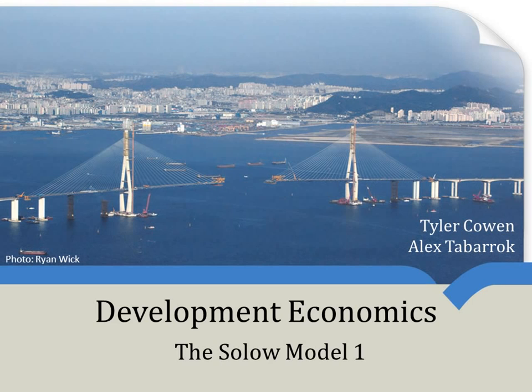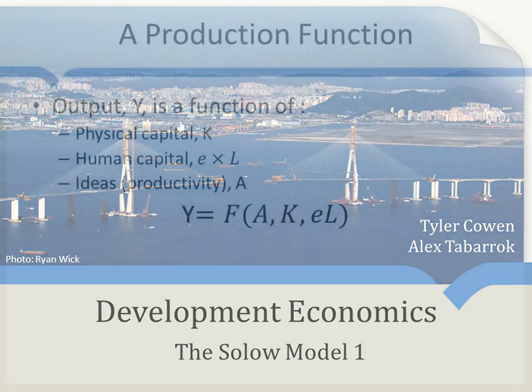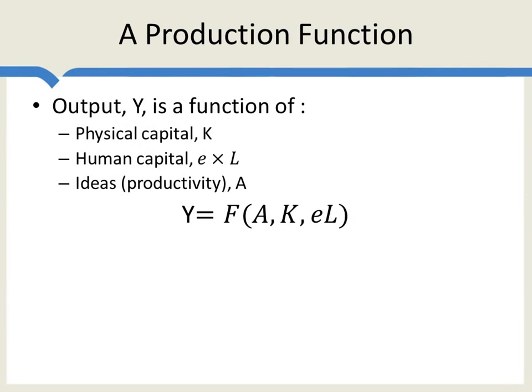The Solow model begins with a production function, which is simply a mathematical model describing how output is produced. We're going to write output y as a function of physical capital k, human capital — which we write as e times l, you can think of that as education times the number of laborers — and ideas, which we write as a. Later on, we'll also interpret this a factor as productivity. So output is equal to a function of ideas, physical capital, and human capital.